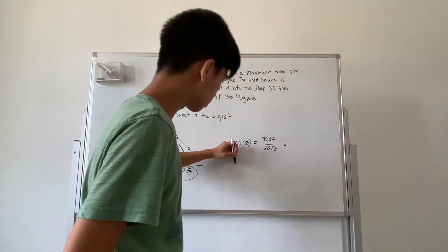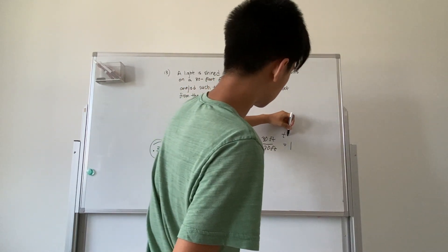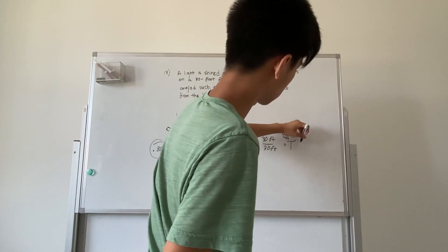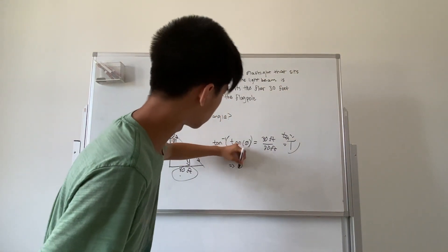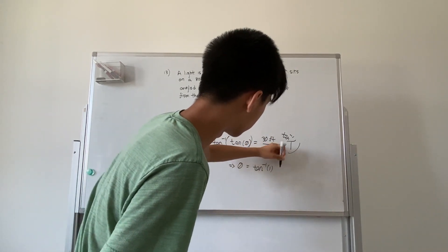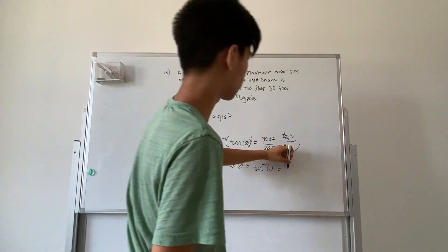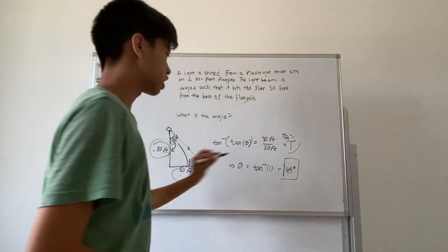Then you can take the inverse tangent of both sides. That would give theta on the left side, which equals inverse tangent of 1, which equals 45 degrees. That is the solution.